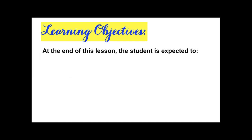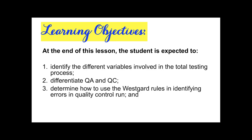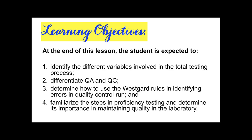For our learning objectives, at the end of this lesson, you are all expected to: identify the different variables involved in the total testing process; differentiate QA or quality assurance and QC or quality control; determine how to use the Westgard rules in identifying errors in quality control runs; and familiarize the steps in proficiency testing and determine its importance in maintaining quality in the laboratory.